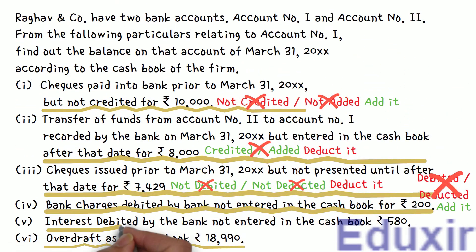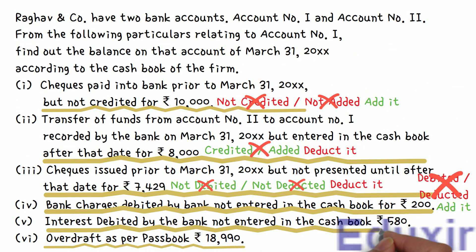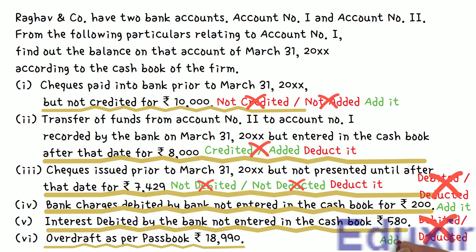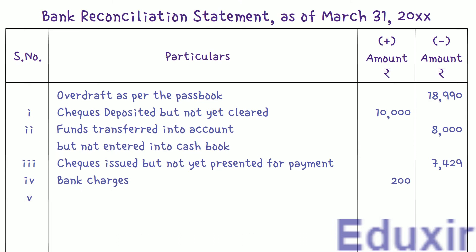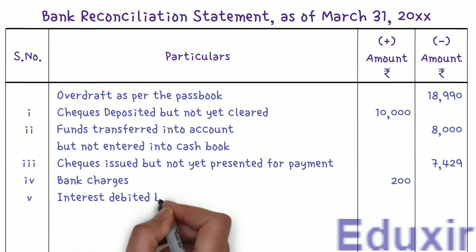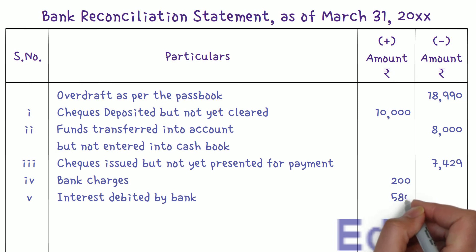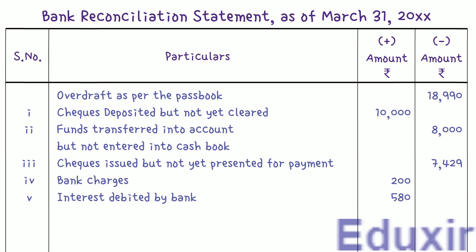In this case, an interest amount of 580 rupees is debited by the bank in the passbook. As the business has an overdraft balance, the bank charges interest on this amount and directly debits it in the passbook. But the business will not be aware of these interest charges until the bank statement is received. We need to add this amount to the passbook balance to get the cashbook balance. Let us write the particulars as 'interest debited by bank' and enter 580 rupees in the plus amount column.